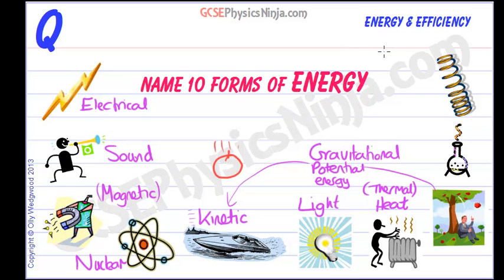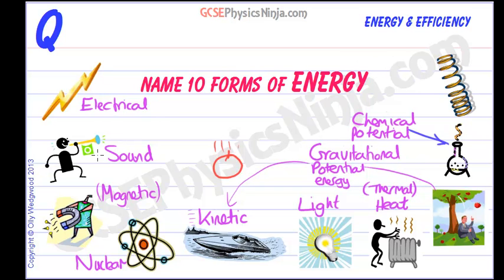We've got chemical energy — I'm going to call this chemical potential energy. Whenever you hear the word potential, all you need to think of is the word stored, because that's what it means. Chemical potential energy is stored energy in your muscles, for example, or it could be in a chemical that could be released in an explosion. So potential means stored energy.